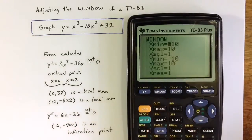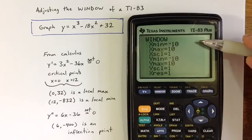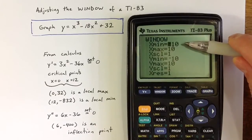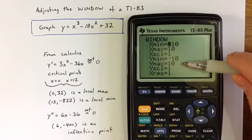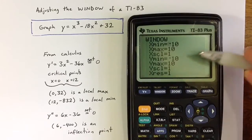The window controls the settings of the window, and we can see those standard settings. Negative 10 to 10 are the minimum and maximum for x, and negative 10 to 10 are also the minimum and maximum for y.